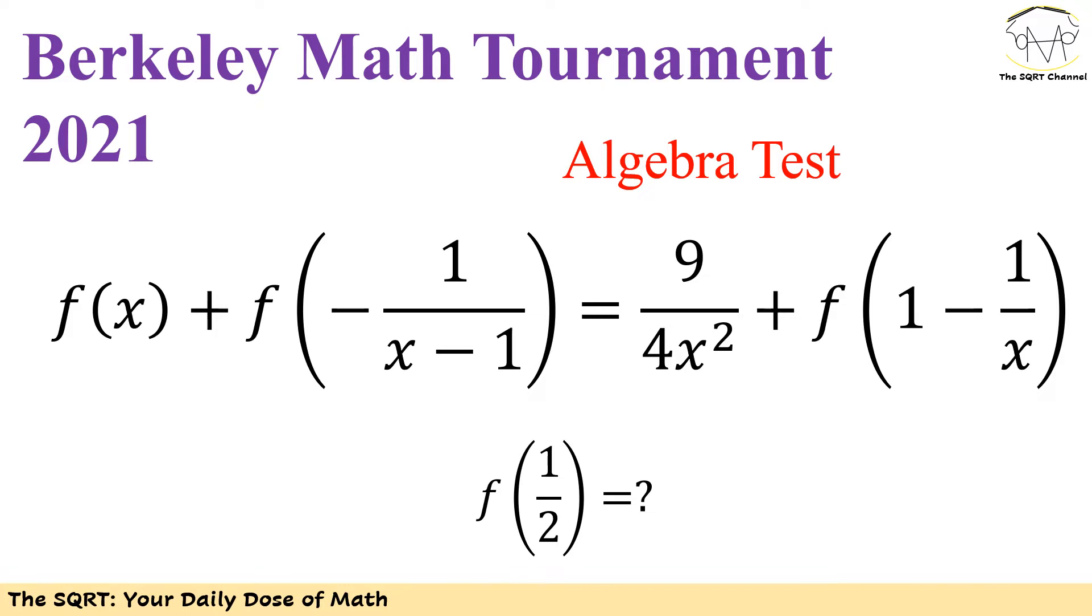Here I have f of x, f of negative 1 over x minus 1, and f of 1 minus 1 over x. We are going to find f of 1 over 2 here. Let's take a look at the original problem first and then we will talk about the solution.